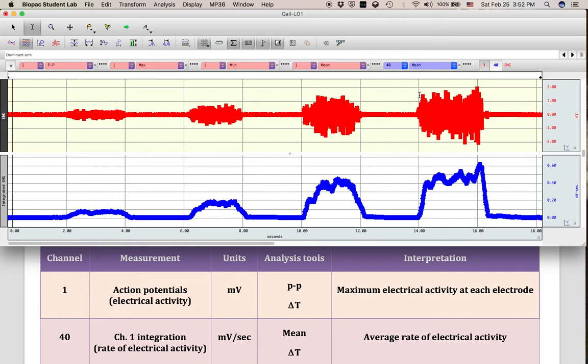Whenever the electrical activity is higher at electrode 1, we'll have our negative values, and when it's higher at electrode 2, we'll have our positive values.